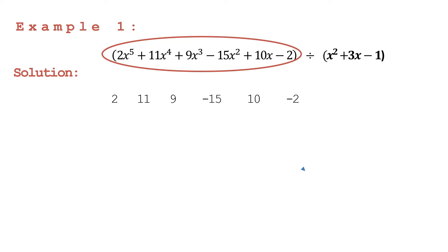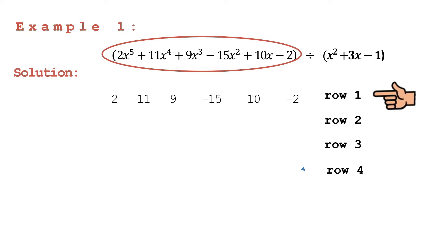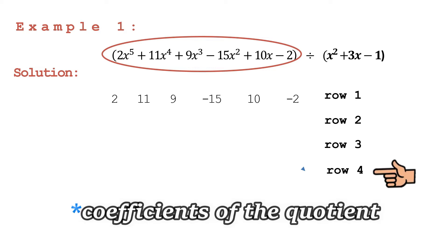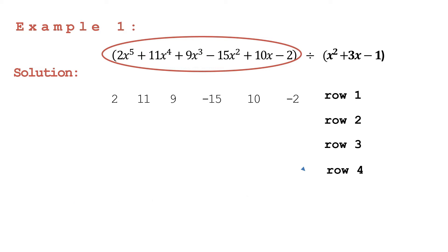We have positive 2, positive 11, positive 9, negative 15, positive 10, and then negative 2. Don't forget to carry the sign of the numerical coefficients. In this process we have four rows: row one contains the numerical coefficients of your dividend, row two will contain all the products of the second divisor, row three will contain all the products of the first divisor, and row four will contain all the sums of each column.